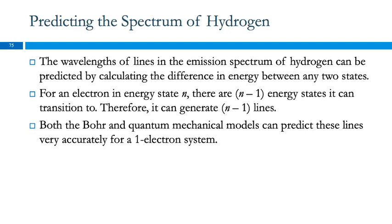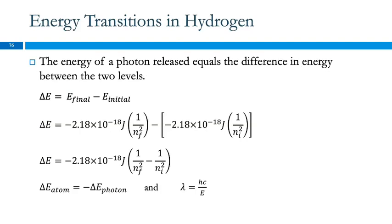For hydrogen, we can predict the lines in the emission spectrum by calculating the difference in energy between different states. The Bohr model and the quantum mechanical model both predict these lines very well for hydrogen — a one-electron system. The Bohr model only works for the one-electron system, but thankfully quantum mechanics works for all the others as well.